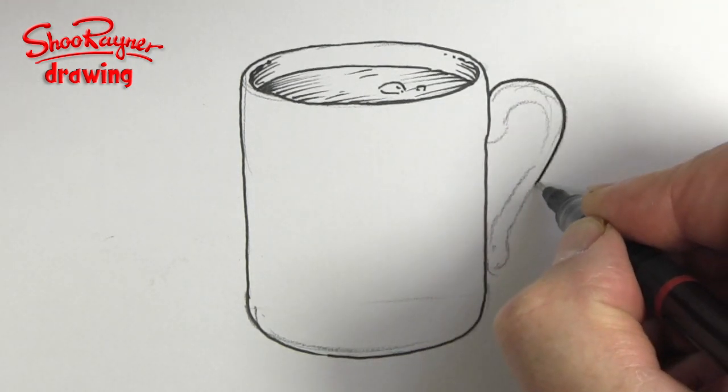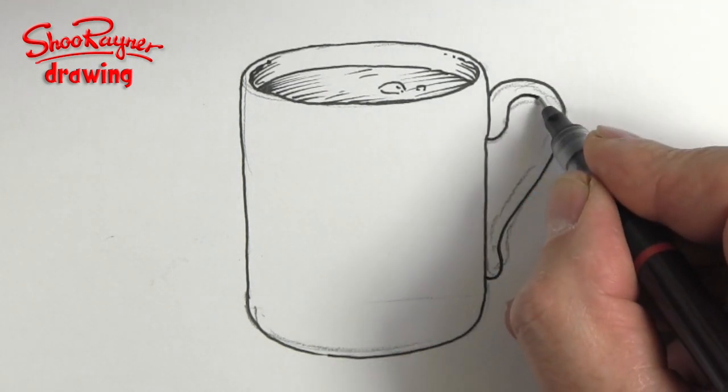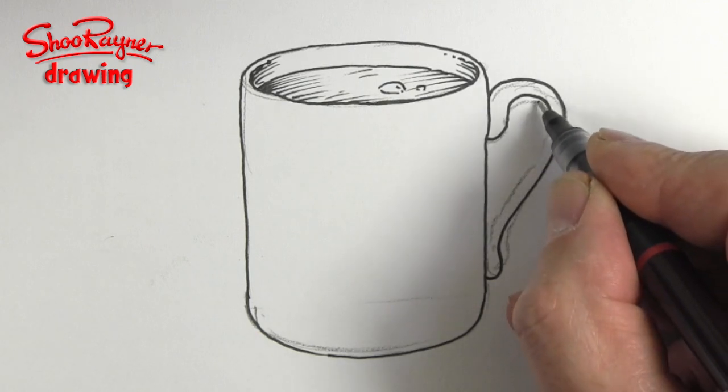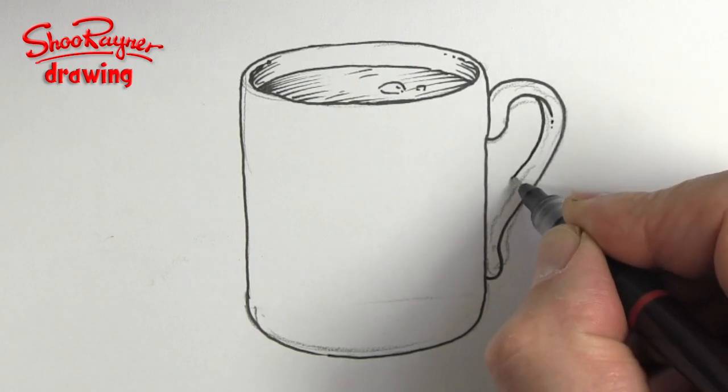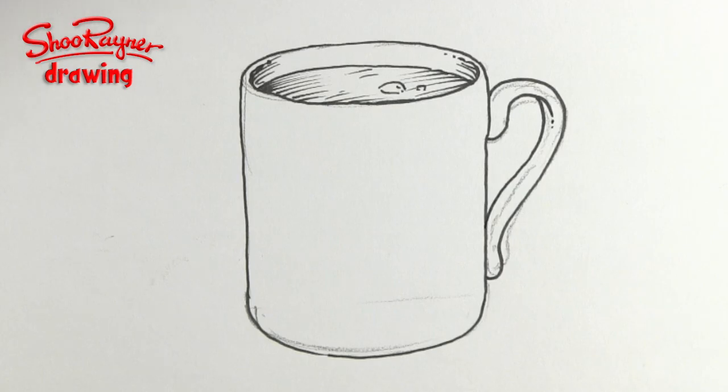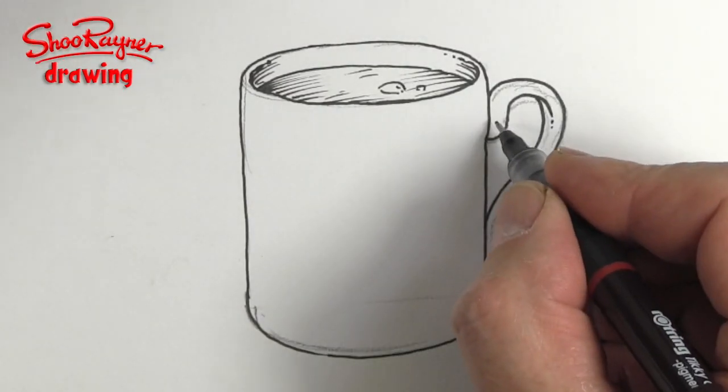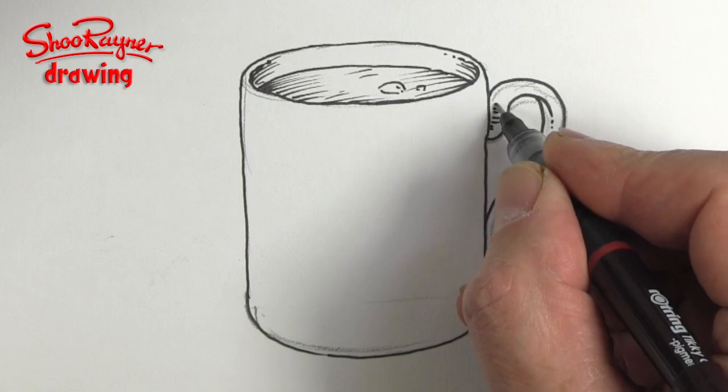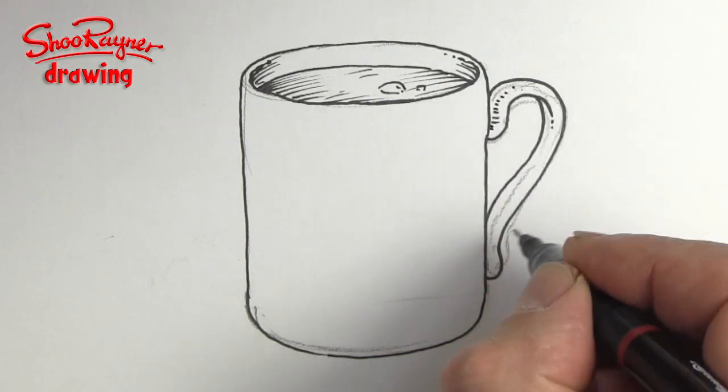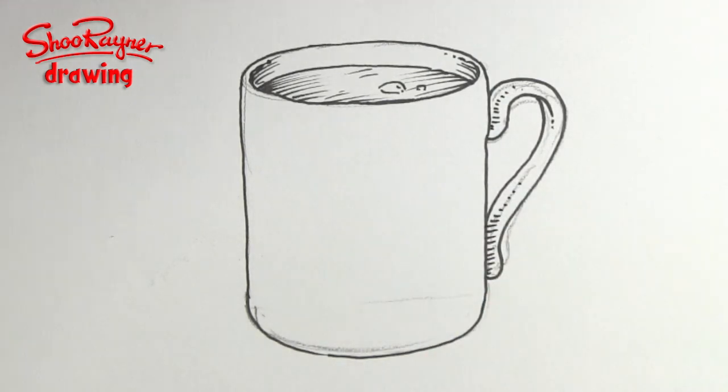And then I'm going to do the handle. And then this will come around. I'm going to just let that fade there and then bring that in around the back there just to give a bit of 3D-ness to it. And then I'll put a bit of shading there and some shading there too.